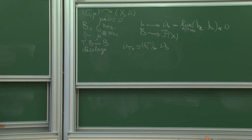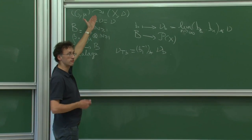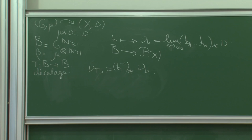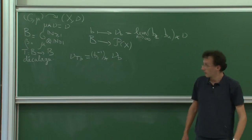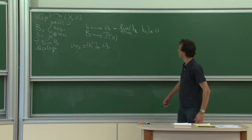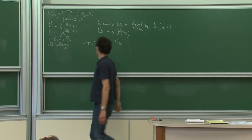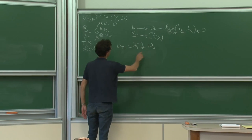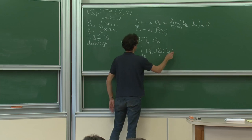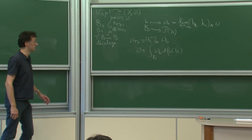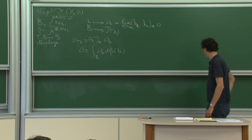Quand on veut construire des mesures stationnaires, on les construit comme des points fixes d'un opérateur — c'est pratique de les voir comme ça. Par contre, dans le travail produit avec Yves Benoît, pour montrer des propriétés géométriques fines de ces mesures, il est plus pratique de les voir de l'autre point de vue. Les deux points de vue sont équivalents : quand on donne une famille vérifiant la propriété d'équivariance, la mesure nu intégrée par rapport à bêta est stationnaire — c'est immédiat.